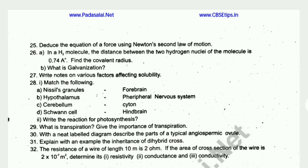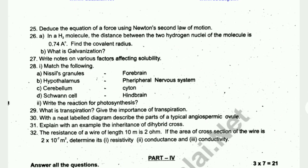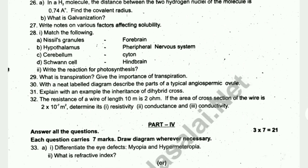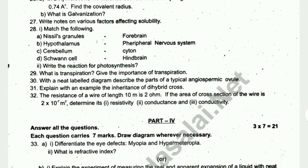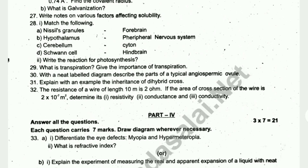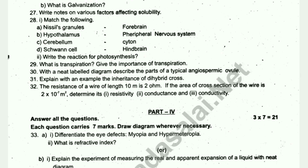Question 32 is compulsory: The resistance of a wire of length 10 metres is 2 ohms. If the area of cross-section of the wire is 2 × 10⁻⁷ square metres, determine its resistivity, conductance, and conductivity.